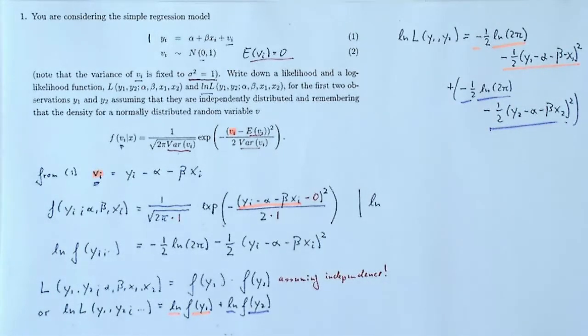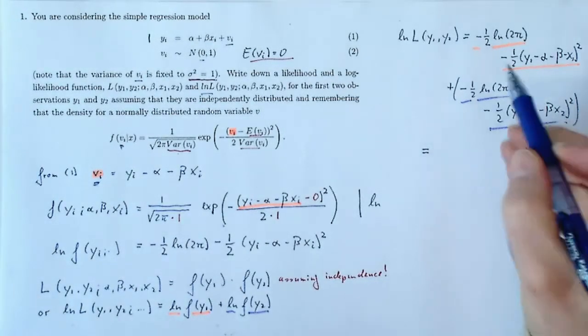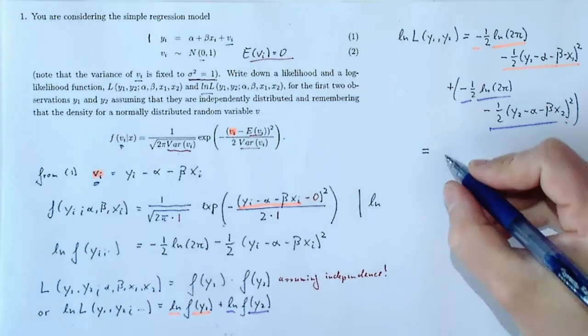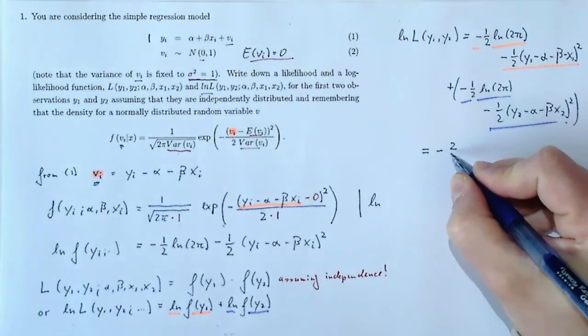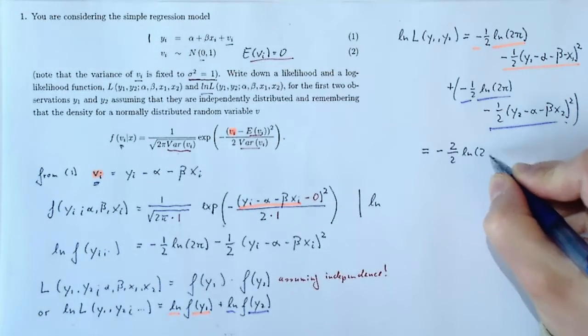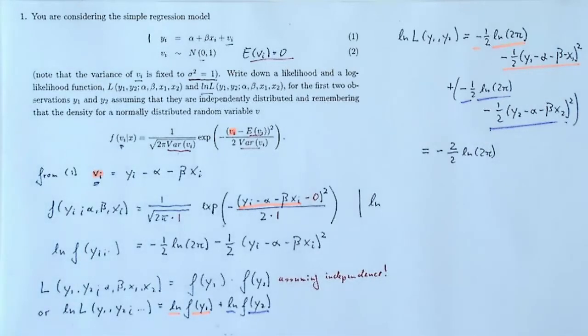Because we only have two observations, y1 and y2, this is it. We can now collect a few terms. For instance, that ln negative 1 half ln 2 pi term appears two times, so that turns into negative 2 over 2 ln 2 pi.